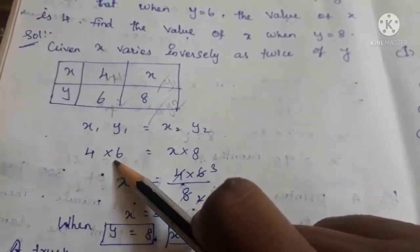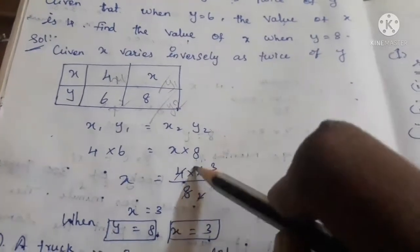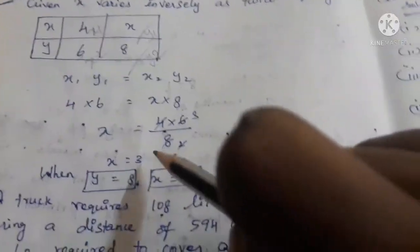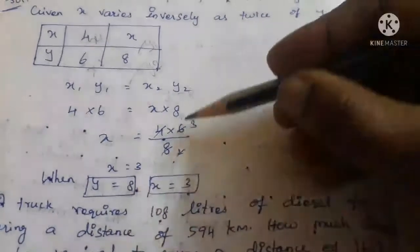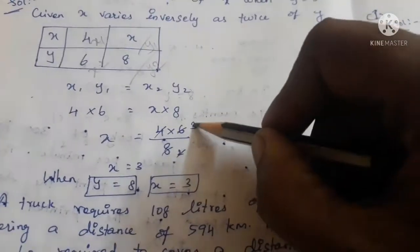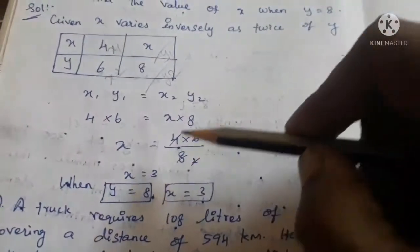Substituting: x1 = 4, y1 = 6, x2 = x, y2 = h. So 4 into 6 = x into h. Therefore x = 4 into 6 divided by h = 24 divided by h. Simplifying: 4 ones are 4, 2 fours are 8, 2 ones are 2, 3 twos are 6. So x = 3.